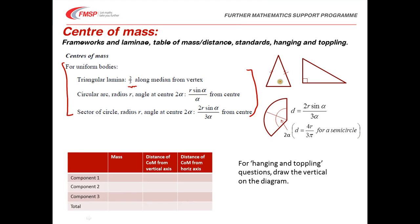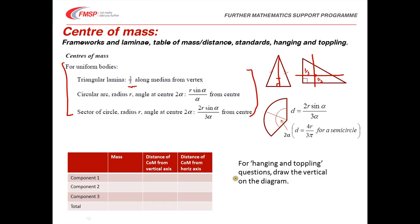All of the triangles you'll deal with in Edexcel M2 will be either isosceles or right-angled. For the isosceles triangle, the centre of mass will always be on the line of symmetry down the middle, a third of the way up the height from the base. For a right-angled triangle, take a line a third of the way up the short side and a third of the way up the other perpendicular edge — the centre of mass is where those two lines cross, so a third of the way along in each direction.